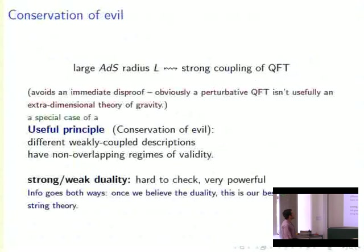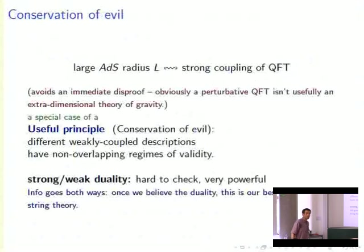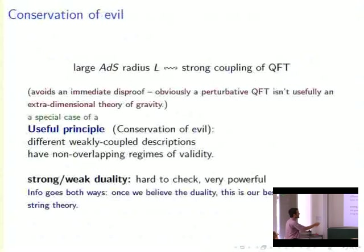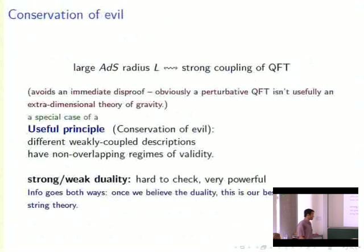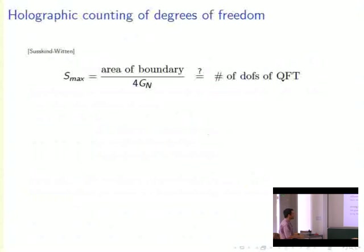Large AdS radius corresponds to strong coupling of the field theory — if it weren't strongly coupled you could just solve the field theory directly, and you can prove there's no large extra dimension involving gravity. This is a special case of a general principle: in any duality, different weakly coupled descriptions should have non-overlapping regimes of validity. So this is a strong-weak duality, which makes it hard to check, but once you believe it, it's very powerful.